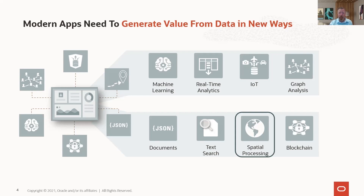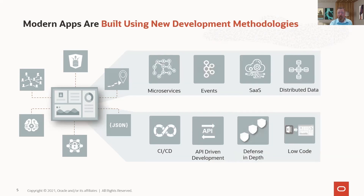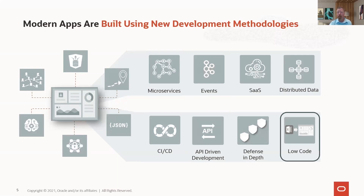Blockchain has become very popular. And it's not only the data itself, but also the way we consume it and the way applications work. Not only has the data layer exploded, but the development platform has exploded as well — microservices, events, API-driven, low-code, distributed. We're pulling data from different SaaS applications and building our services in different data centers and integrating them together.